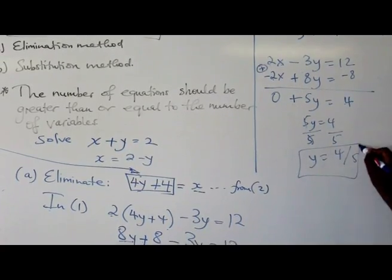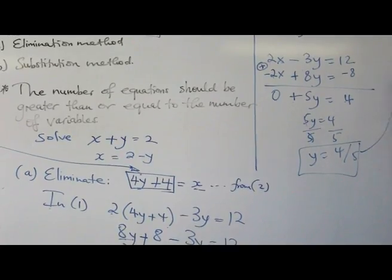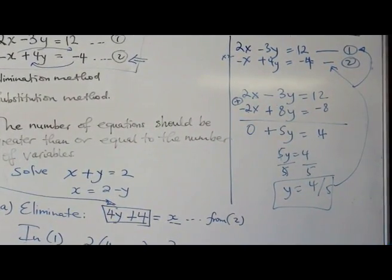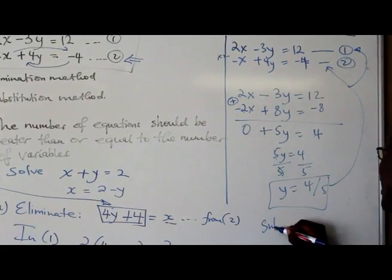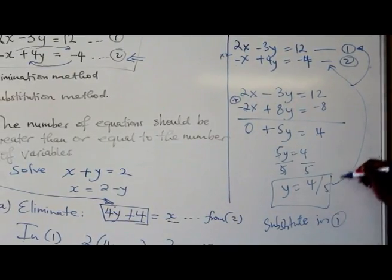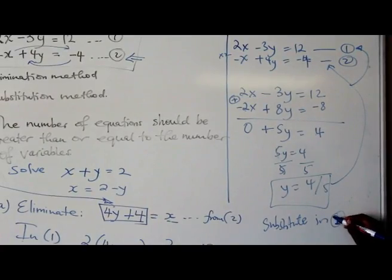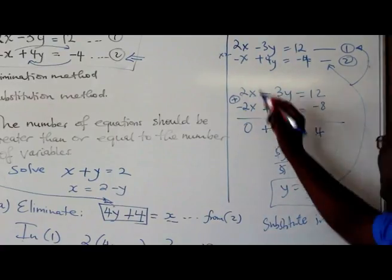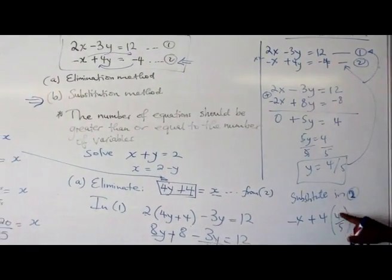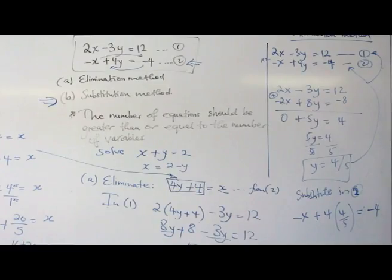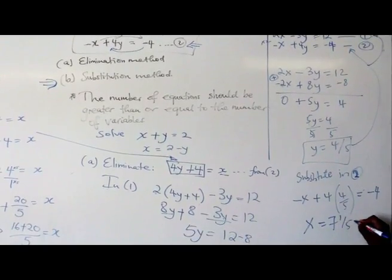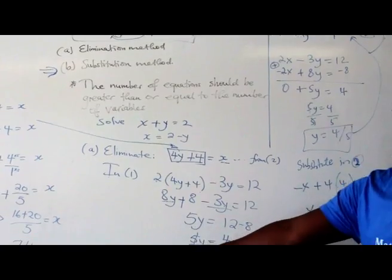Now, once you've got your value of y, then you can choose to say, do I want to substitute it in equation 2 or do I want to substitute it in equation 1 so that I can get the value of x. I'm going to substitute it in 2. So negative x plus 4y, so here I've replaced the y with 4 over 5, equal to negative 4. So if you do your calculation, you'll find that x is going to be equal to 7 and 1 over 5, which is the same as what we got with the substitution method.